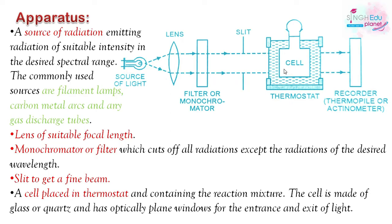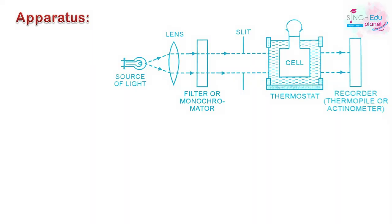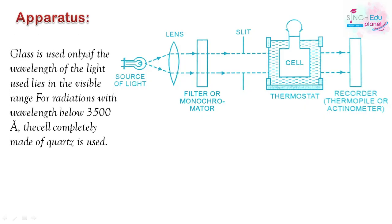After the slit, a cell is placed in a thermostat. The cell contains the reaction mixture and is made of glass or quartz with optically plain windows so that light can enter and exit. Glass is used only when the wavelength of light lies in the visible region. If the radiation is above 3500 angstroms, the cell used will be made of glass.